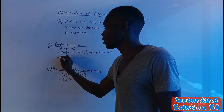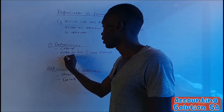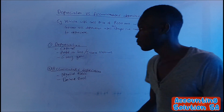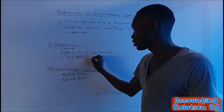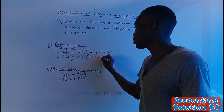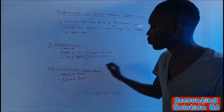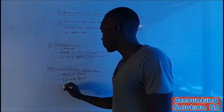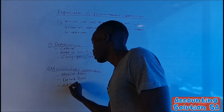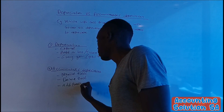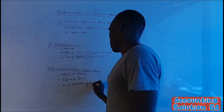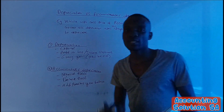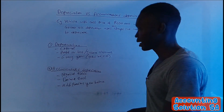Difference number three: depreciation is calculated every year, and there must be a new balance every year — we record only the new balance when it comes to depreciation. But for accumulated depreciation, we add the previous year's balance. In other words, accumulated depreciation increases each and every year.